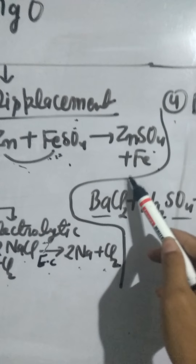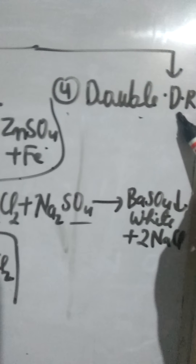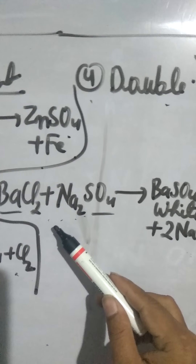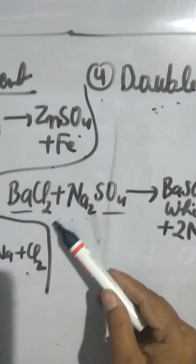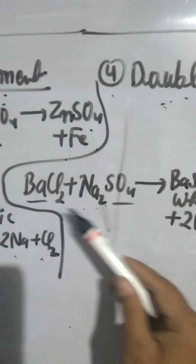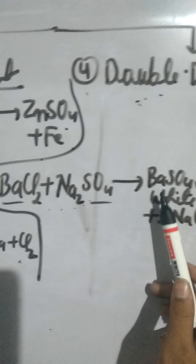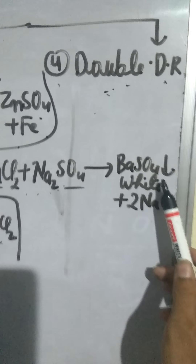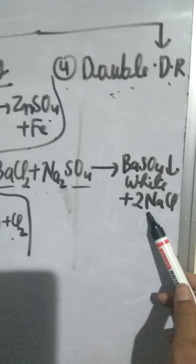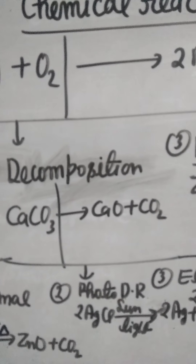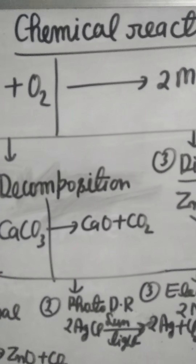We get ZnSO4 solution. Next is double displacement reaction: those reactions in which two compounds react to form two new compounds by mutual exchange of ions are called double displacement reactions. For example, Ba and SO4 combine to form BaSO4 white precipitate. I hope you understand this video on chemical reactions and equations. Like my channel, subscribe my channel, thanks for watching.